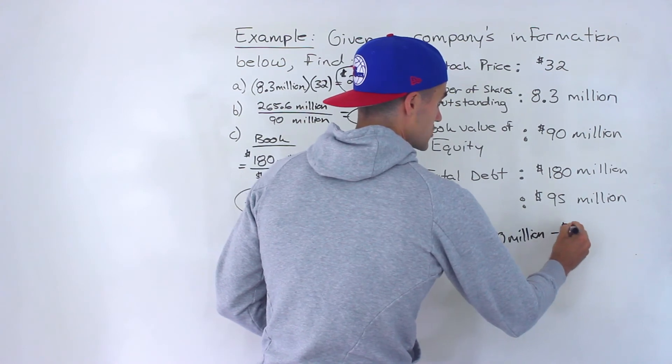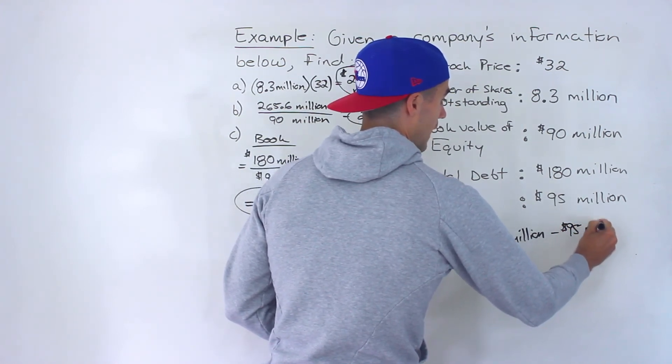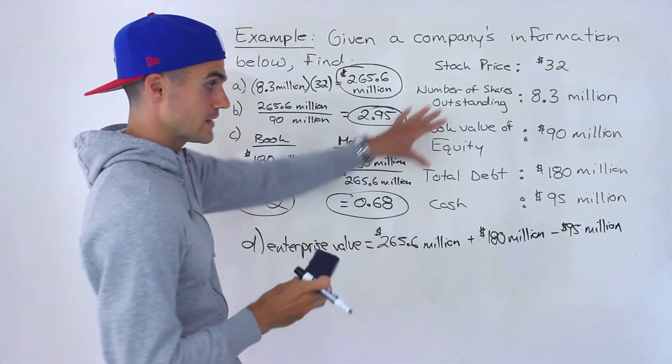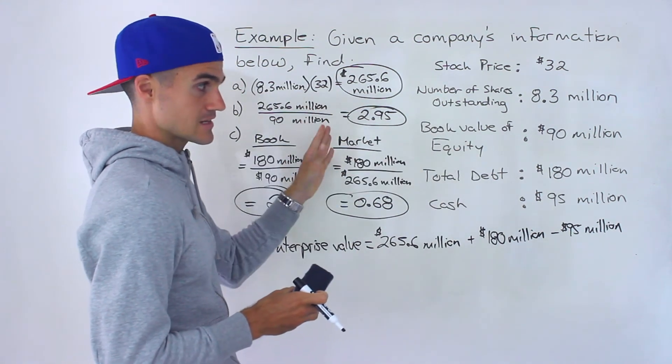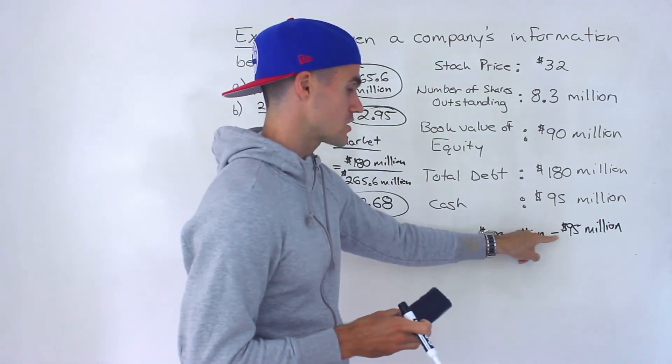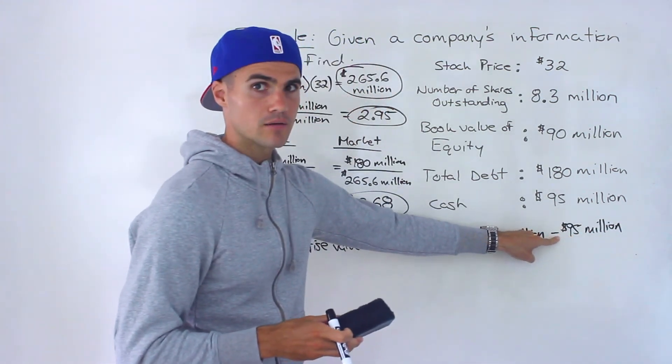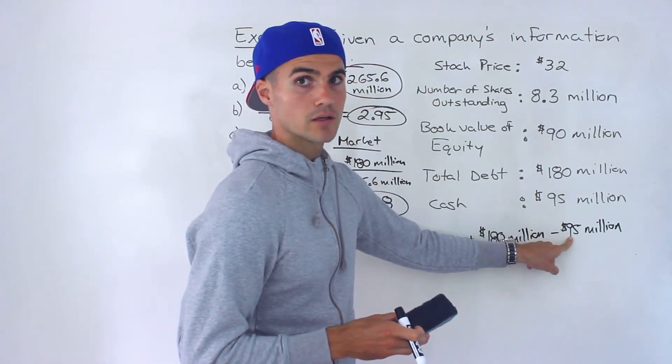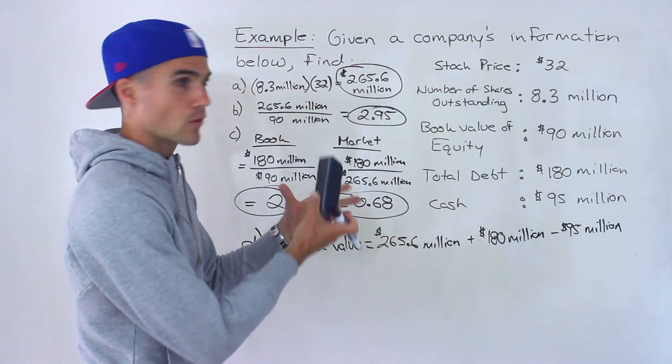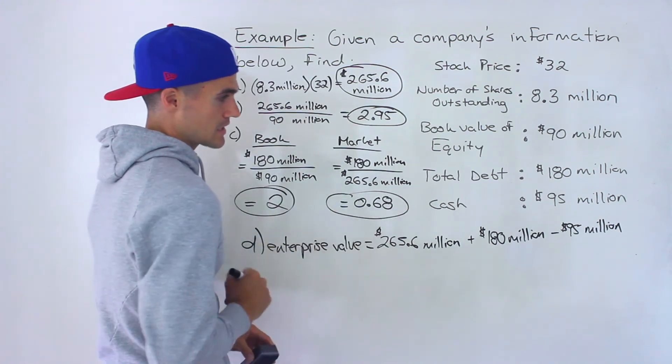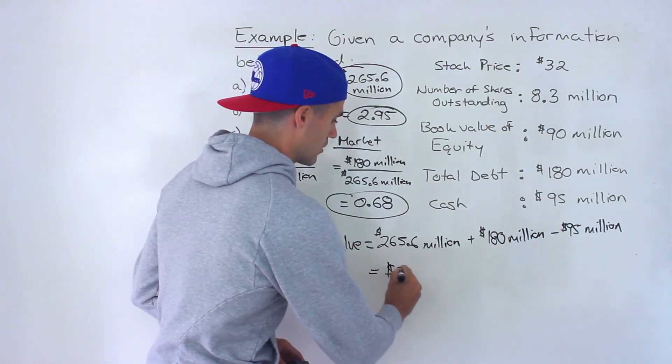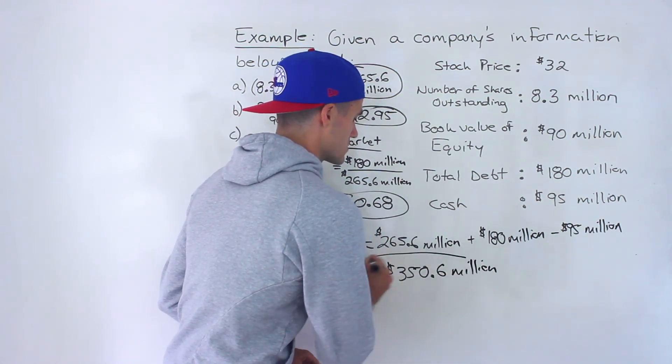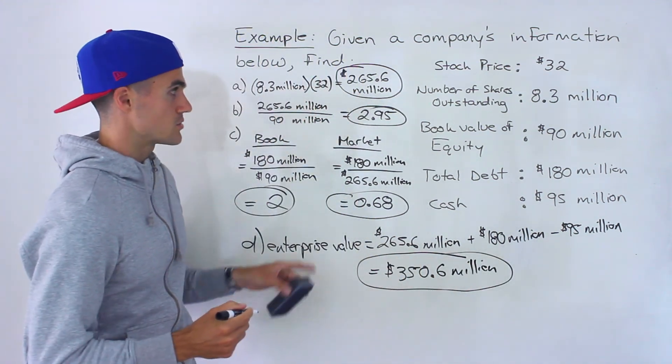So all of those, but then we subtract the cash. Basically, the enterprise value is what is the market value of the assets excluding cash. So if we add the market value of the right side of the balance sheet, that's going to give us the market value of the assets on the left side of the balance sheet. And then we subtract cash. It's almost like this cash is not really doing nothing. So it's like we're pretending that we're going to pay off this debt with this 95 million cash. And so what would the rest of the assets be worth? And when you end up doing this calculation here, you'd end up getting 350.6 million dollars. So that represents your enterprise value for this company.